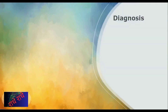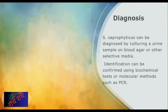Culturing a urine sample on blood agar or other selective media is essential for the correct diagnosis of Staphylococcus saprophyticus. Identification can then be further confirmed with biochemical tests or even through the use of advanced molecular methods such as PCR. Being thorough when diagnosing this type of infection is important in order to ensure an accurate identification and subsequent course of treatment.